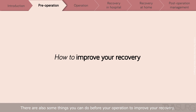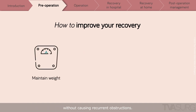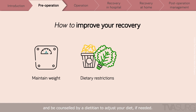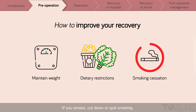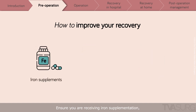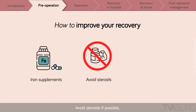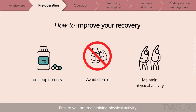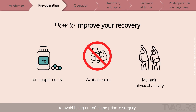There are also some things you can do before your operation to improve your recovery. Ensure you maintain your weight without causing recurrent obstructions. Avoid certain foods that have caused problems in the past, and be counseled by a dietitian to adjust your diet if needed. If you smoke, cut down or quit — smoking can increase the risk of complications and the risk of Crohn's recurrence. Ensure you're receiving iron supplementation if you are anemic or have low iron. Avoid steroids if possible. Ensure you're maintaining physical activity to avoid being out of shape prior to surgery.